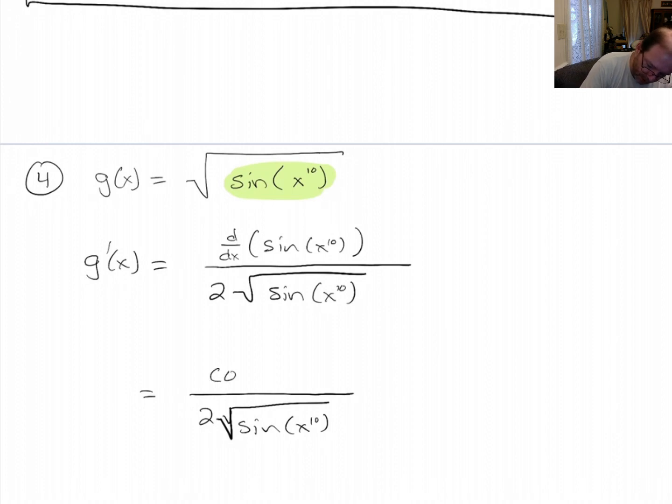Cosine of x to the 10 times derivative of x to the 10, which is 10x to the 9. So let's see, I can cancel the 10 with the 2. This is all multiplied together, leaving me with 5x to the 9 cosine x to the 10. And then downstairs, I've got square root of sine x to the 10.